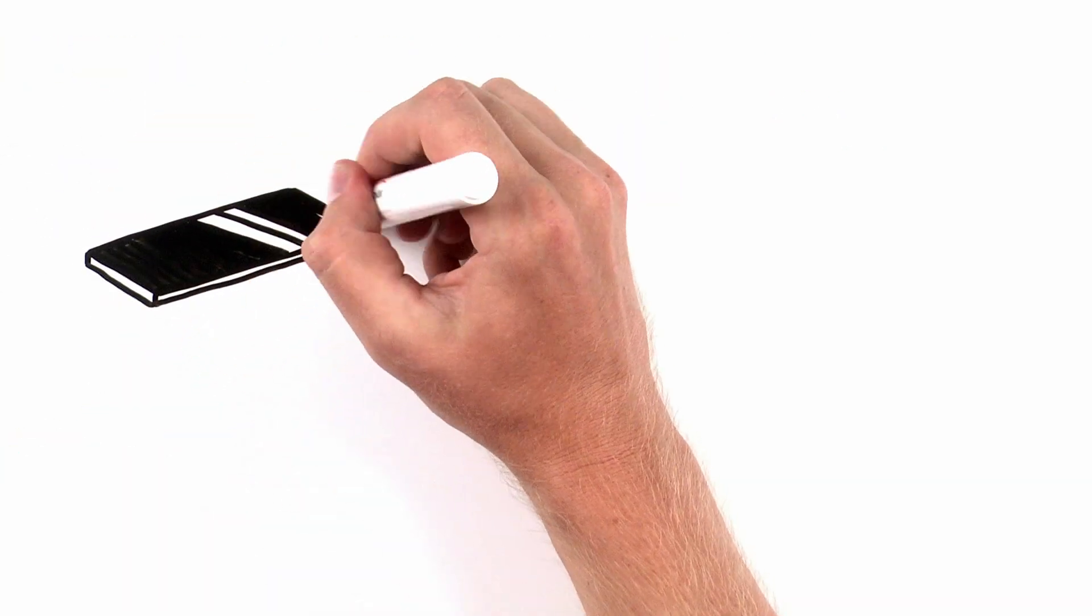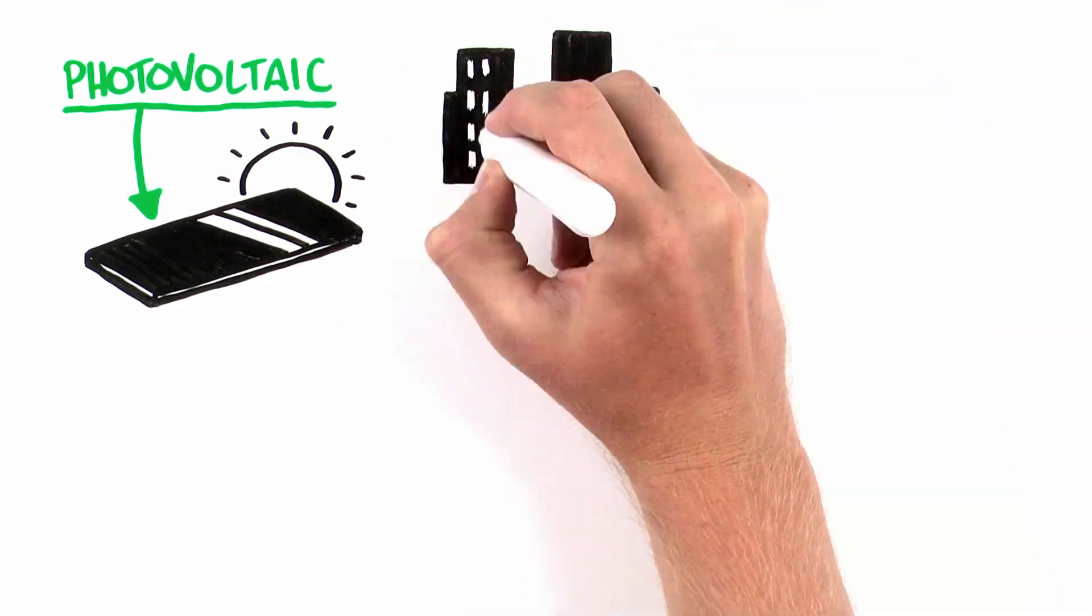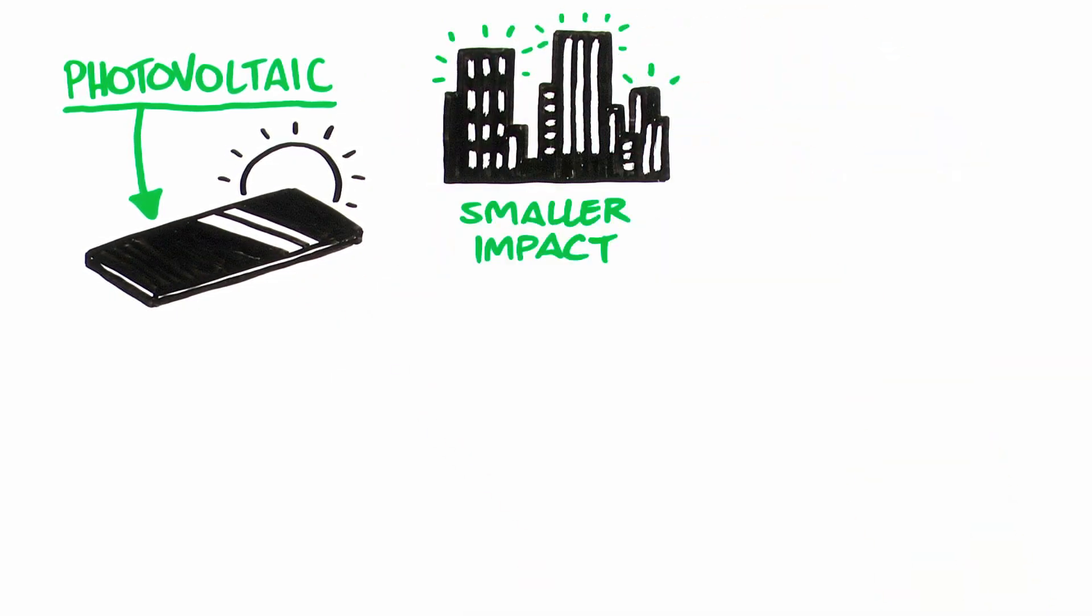First Solar does this with thin-film photovoltaic technology that produces more power with a smaller environmental impact than traditional solar modules.